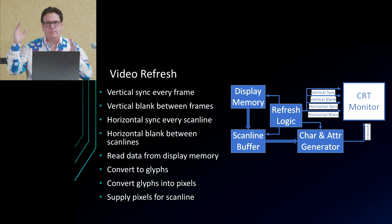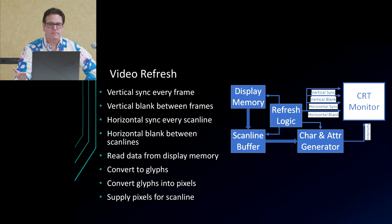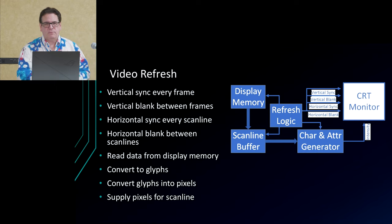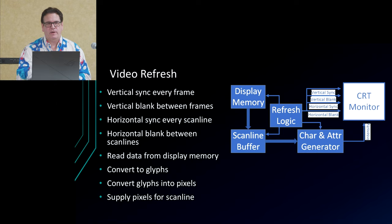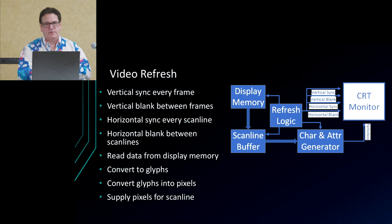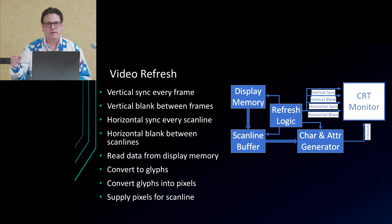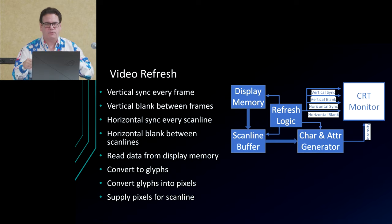A series of scan lines makes up a frame, and a series of frames is what the display shows you. In a terminal there's an additional wrinkle: what's stored in display memory is characters, not pixels. Characters are read out of display memory and put through a character and attribute generator circuit, which looks up the ASCII or EBCDIC code in a font table stored in read-only memory and turns it into a rectangular box of pixels. The appropriate pixel for each scan line for each character is then sent as an intensity signal to the monitor.